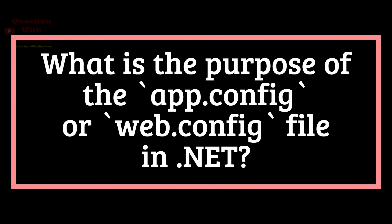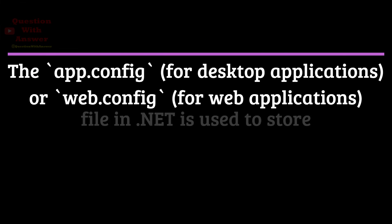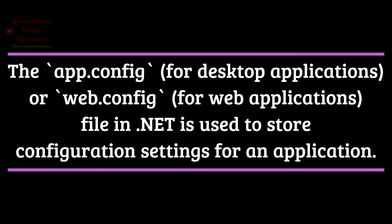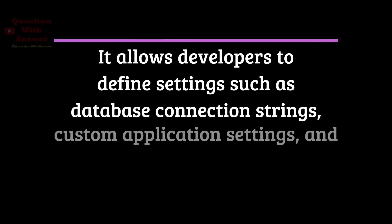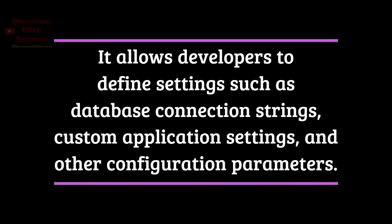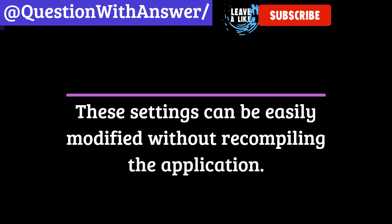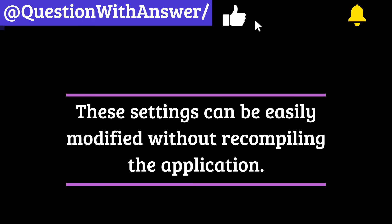Question 19: What is the purpose of the app.config or web.config file in .NET? Answer: The app.config file for desktop applications, or web.config for web applications, is used to store configuration settings for an application. It allows developers to define settings such as database connection strings, custom application settings, and other configuration parameters. These settings can be easily modified without recompiling the application.